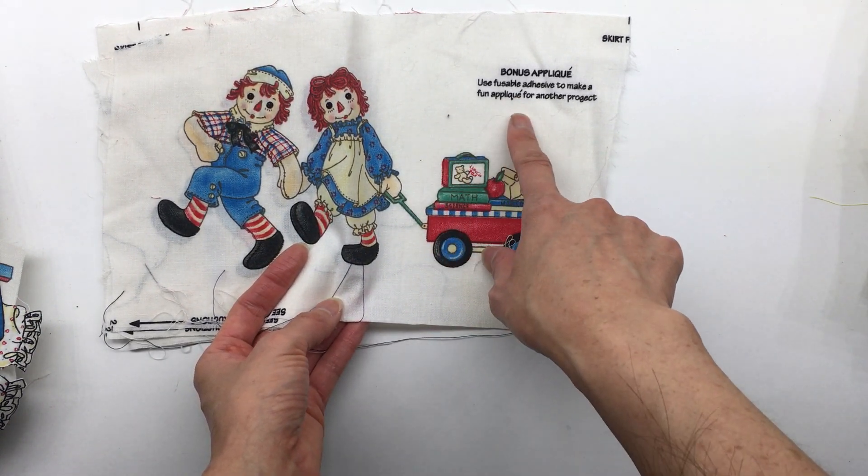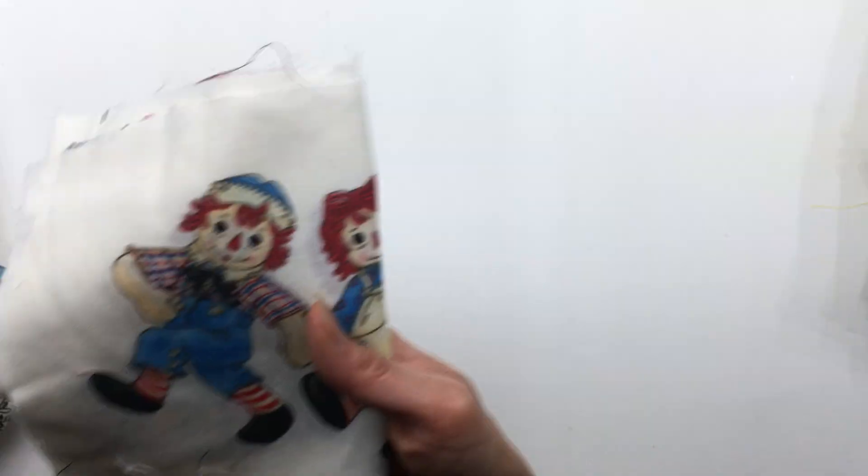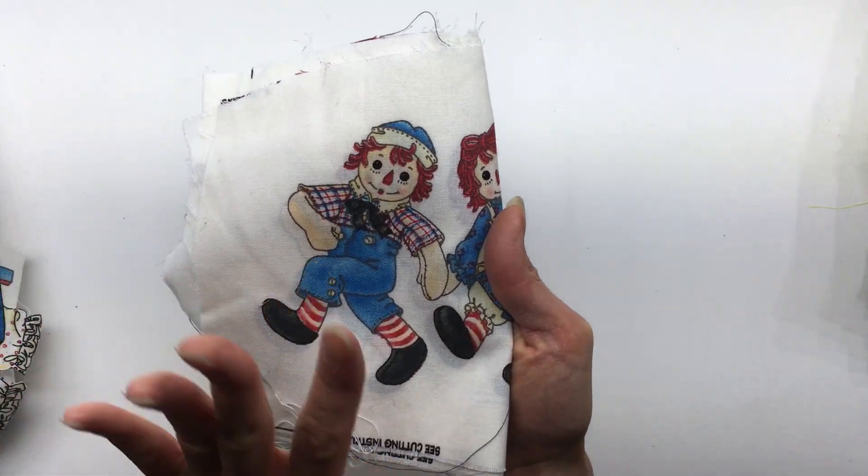I guess you could turn this into an applique using fusible adhesives. I'm not sure, but in any case I love Raggedy Ann and Andy, so I just got it.